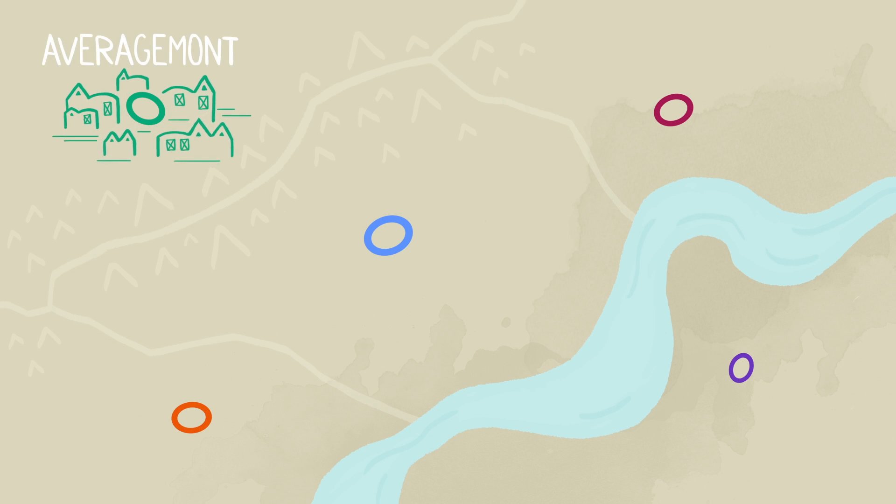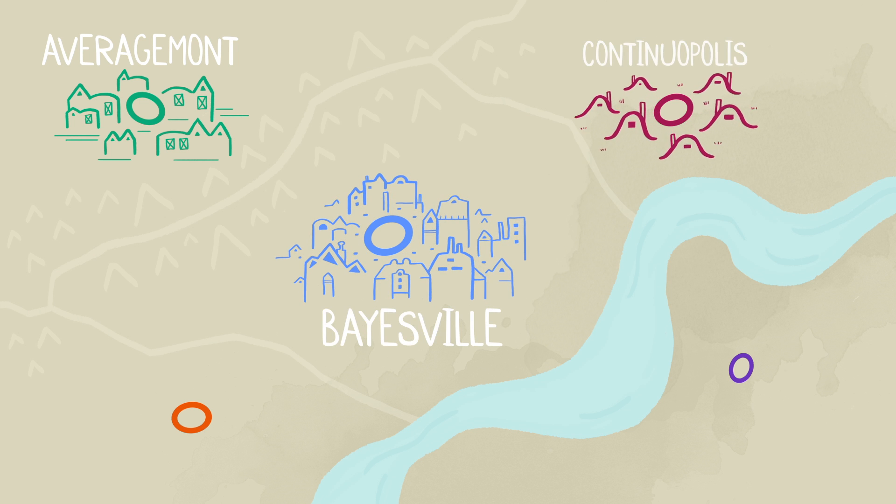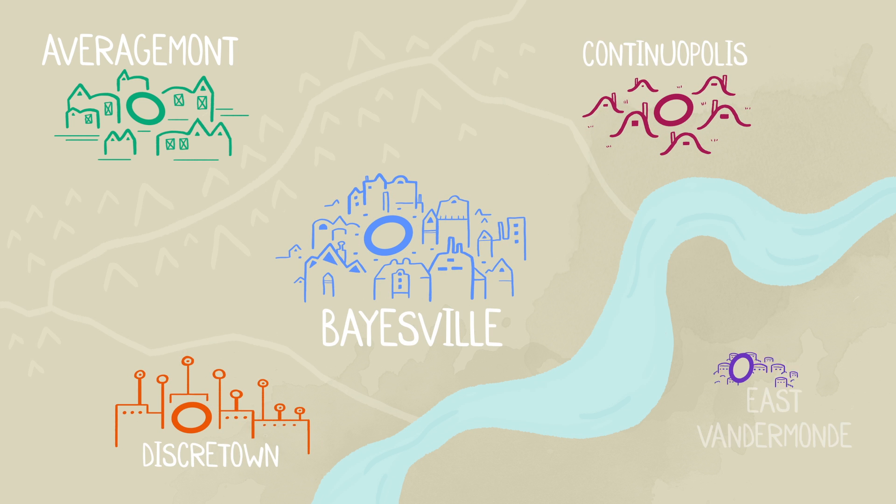The five cities are Averagemont, Baysville, Continuopolis, Discreet Town, and East Vandermond.